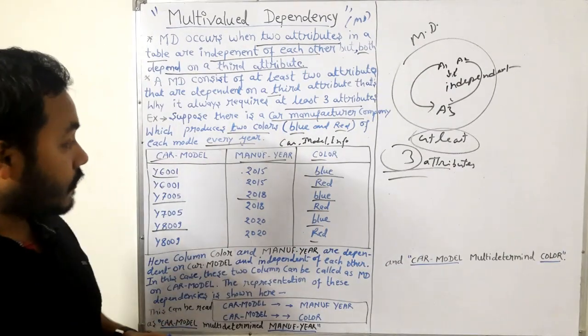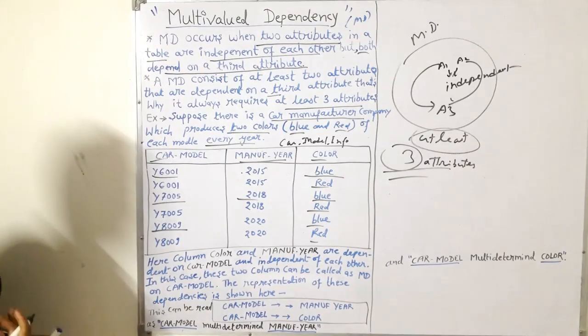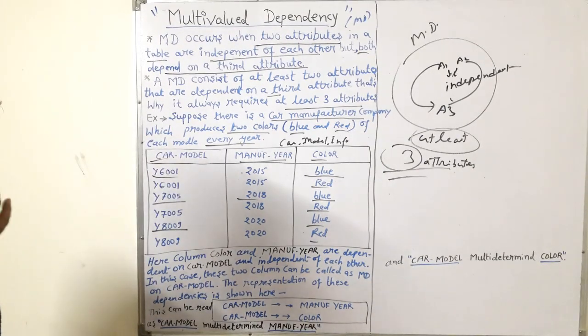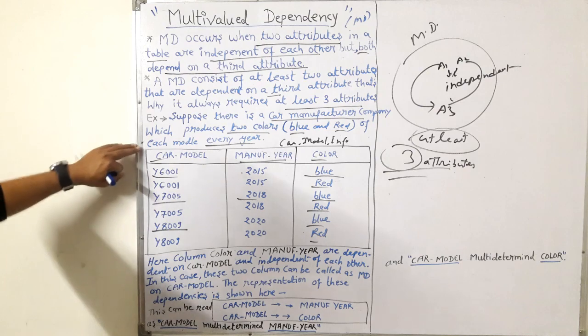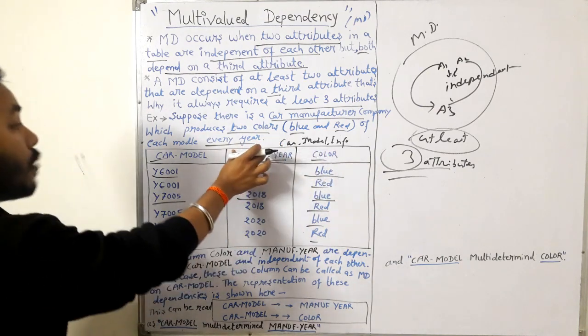Why am I explaining these facts? If you notice carefully, what particular characteristic will you see in this table? Can you tell me? Yes, what? See, this color and this manufacturer year.